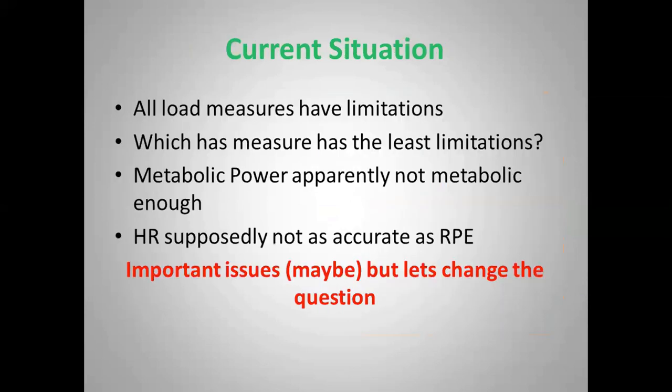In terms of the current situation, we know that all load measures have limitations. For a long time I was battling to see which one's the best, but on reflection maybe that's not the best approach. Maybe the question is: which measure has the least limitations? We've had arguments about metabolic power apparently not being metabolic enough — there's a terminology issue there — and heart rate supposedly not as accurate or representative as RPE for various reasons. But more importantly, I think we want to change the question.